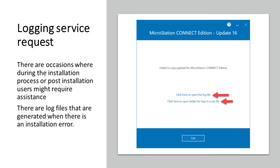Here you see this screen comes up — this is an example of an error that might come up in MicroStation. Here you can click to open the log file. You can send that log file to us, or better yet, you can send us the zip file and attach that to the service request when logging that information.